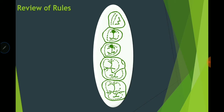The tooth occluding on the mesial fossa will be the mandibular first premolar, and the cusp occluding on that marginal ridge will be the mandibular second premolar buccal cusp.